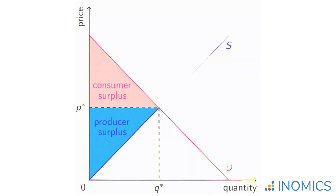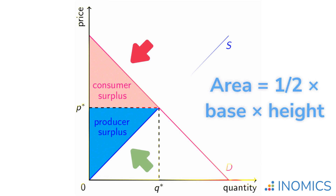We can calculate consumer and producer surplus from the graph shown. In this case, consumer surplus is the area of the pink shaded triangle and producer surplus is the blue shaded triangle. These areas can be calculated just like the area of a triangle.